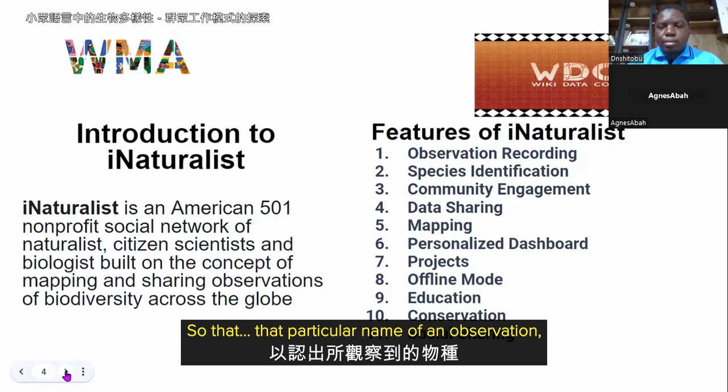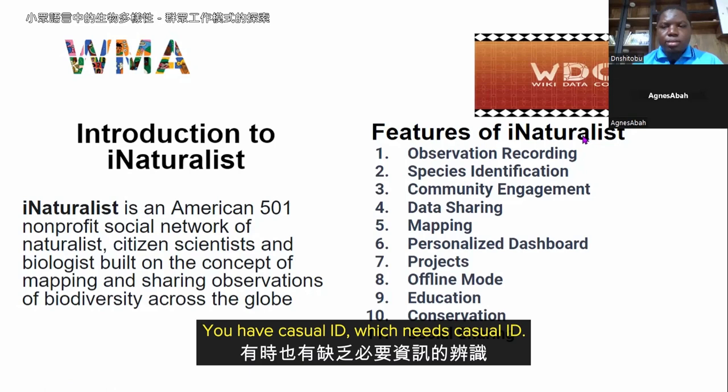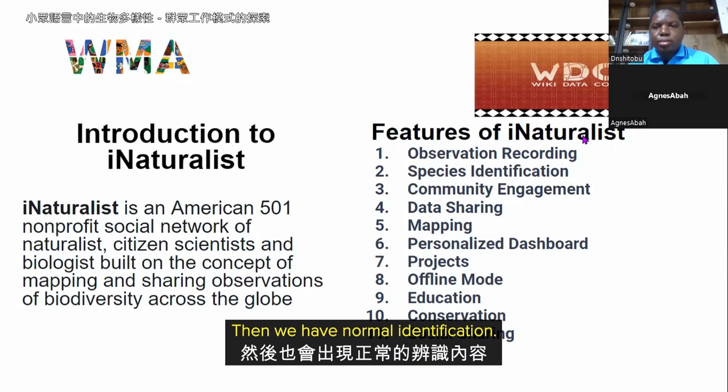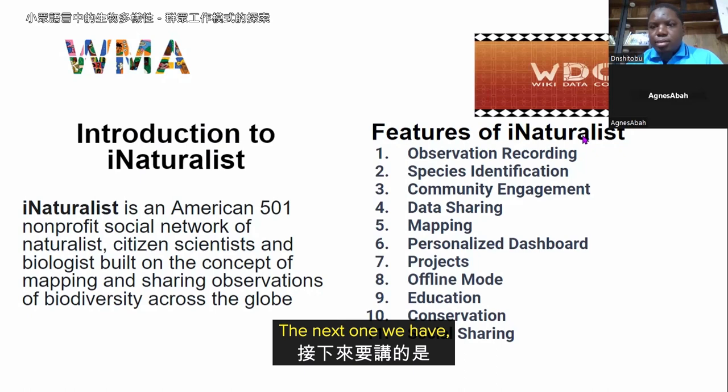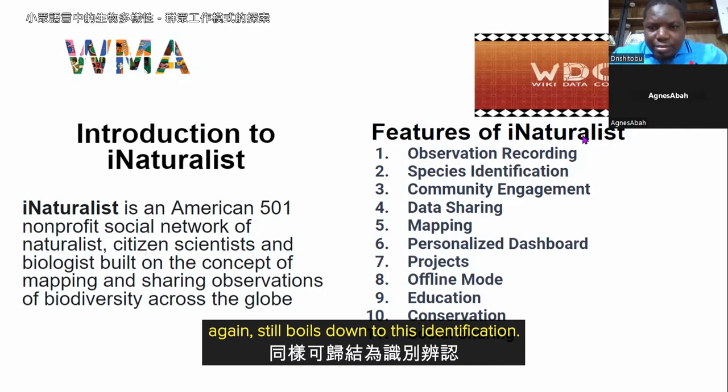Once confirmed, it achieves what is called Research Grade on iNaturalist. There are also casual-grade identifications. The next feature is community engagement, which relates to this identification process. As the definition of iNaturalist suggests, it functions as a social network — like Facebook or Twitter — but as a non-profit organization, where community interaction and engagement around identifications takes place.